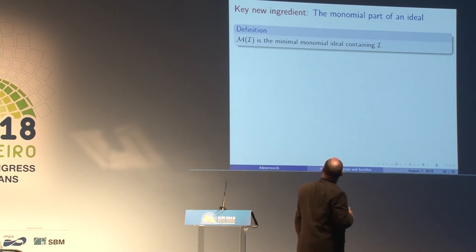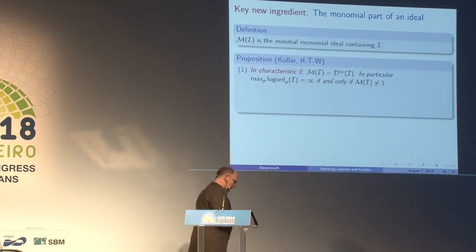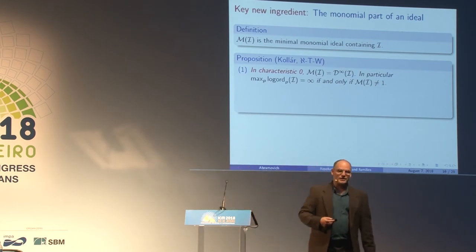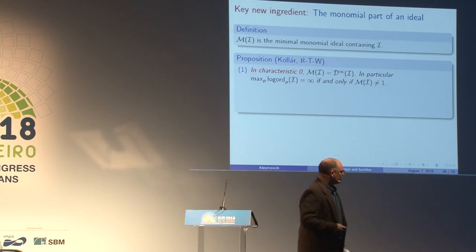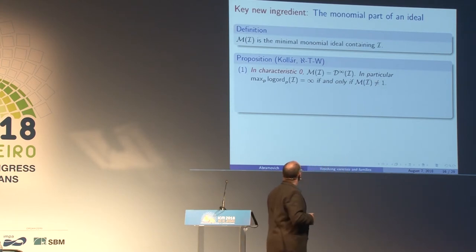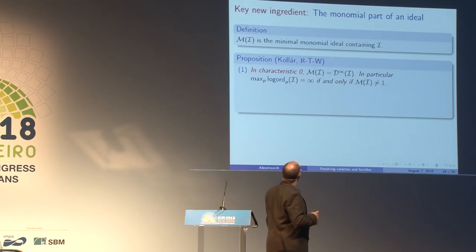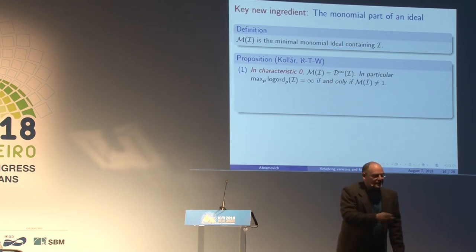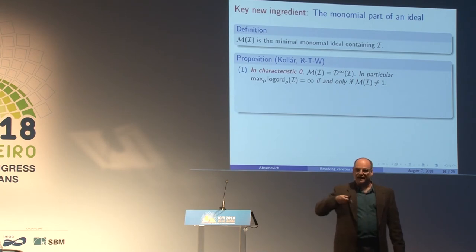We define M(I) to be the minimal monomial ideal containing I. In characteristic zero, the minimal monomial ideal containing I is precisely the differentially stabilized version of the ideal. So the order is infinity if and only if the minimal monomial ideal containing I is not the unit ideal — in other words, if your ideal vanishes identically on a toroidal stratum, the order is infinite; if not, the order is finite.